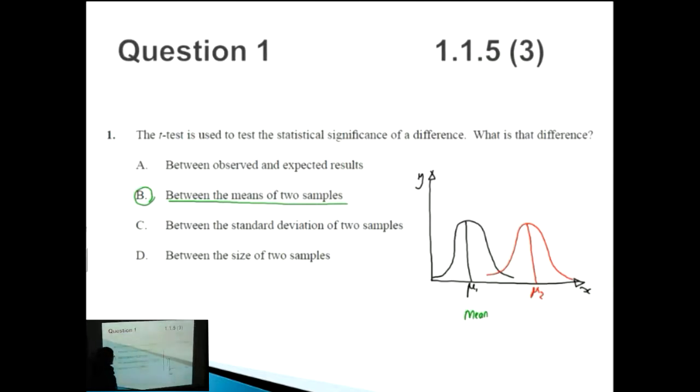A, between observed and expected results. This is one of those answers that just tends to confuse you. It seems like it's relevant, but it's actually not. Between the standard deviation of two samples. If we're comparing the standard deviation of two samples, we'd be comparing the spread of these two. In fact, with a t-test, you're not comparing the spread of the data. The standard deviation itself is what is used to compare the spread.